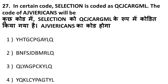Next question: in a certain code 'selection' is coded as QCJCARGML. Looking at the pattern, each letter has a shift of minus two. The first letter S becomes Q (S minus 2 = Q) and the last letter N becomes L. Applying the same logic to the word 'American': A minus 2 gives Y, so the first letter of the code should be Y and the last letter should correspond accordingly. The correct answer is option A, where the first letter is Y.